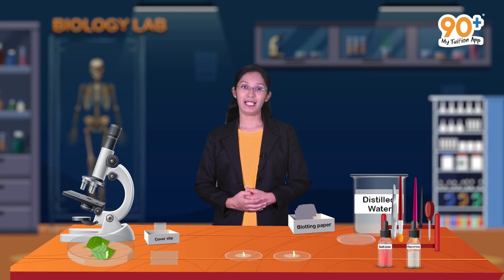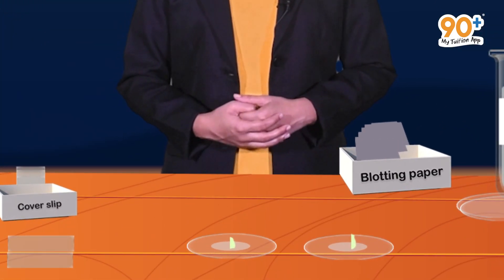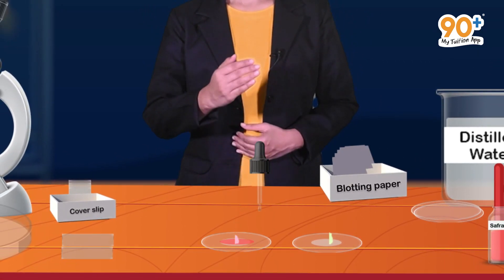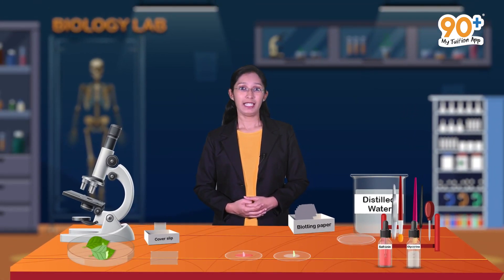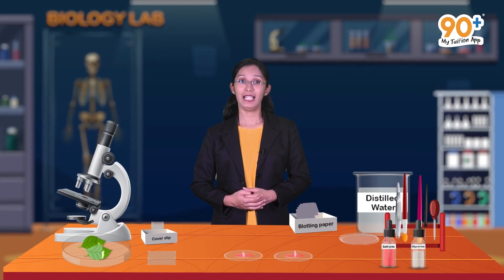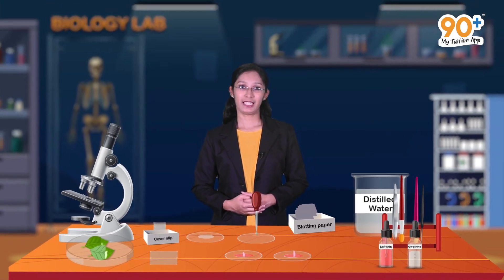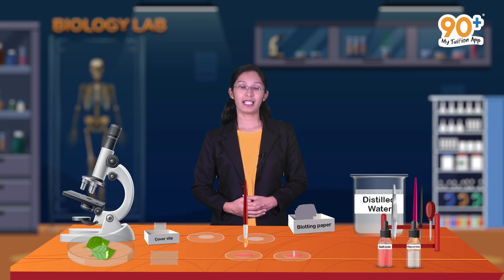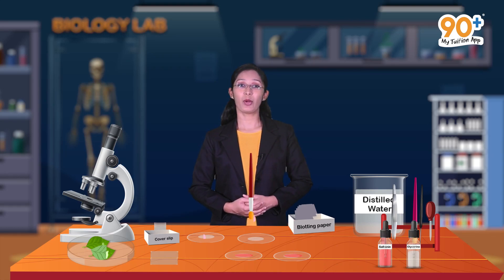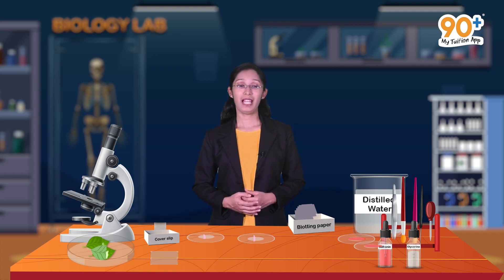Next we need to stain these peels. For this we make use of a stain called saffronin. A few drops of saffronin are added to the upper surface peel in the watch glass. Similarly, a few drops of saffronin are added to the lower surface peel too. Then in two separate watch glasses with distilled water, using a brush, transfer the upper surface peel to one watch glass and the lower surface peel to the next. This is done to remove the excess stain from the peels.